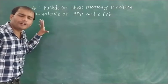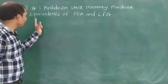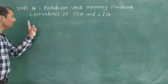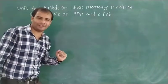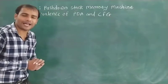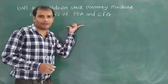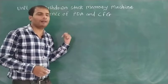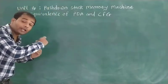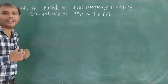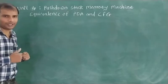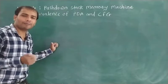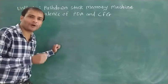Under non-deterministic pushdown automata there is an important topic — the equivalence of PDA and CFG. Equivalence of PDA and CFG means that if you are given a context-free grammar, which we discussed in unit number 3, you need to construct the PDA for that context-free grammar. In the first lecture of unit 4 we saw that PDA can accept or recognize the context-free language.